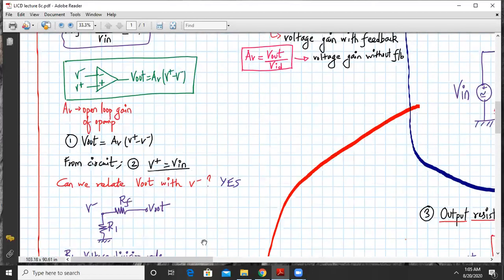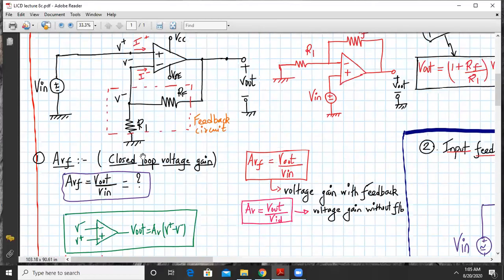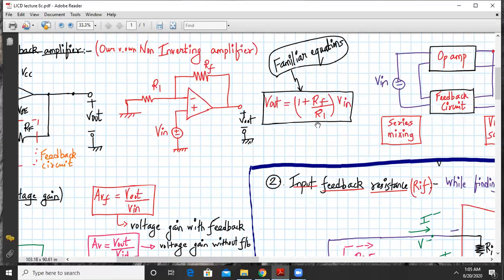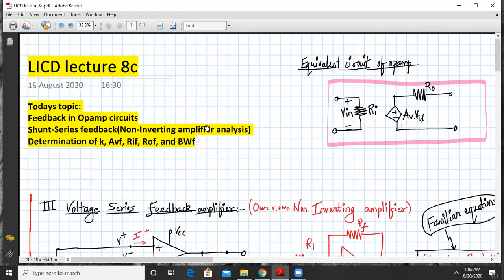Okay, so we have derived the expression for the closed loop voltage gain and it's coming out to be close to this: AVF is coming out to be 1 plus RF upon R1. That's it for today's lecture. We have completed the derivation for the closed loop voltage gain for a non-inverting amplifier using op-amp. We will see some other topic using op-amp some other time. So until then, have a good day and thank you.